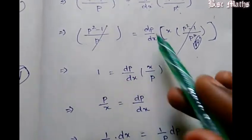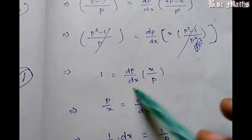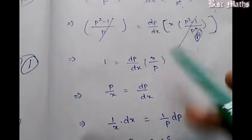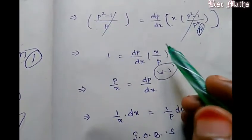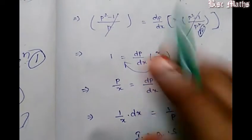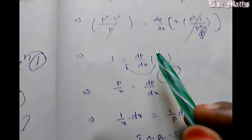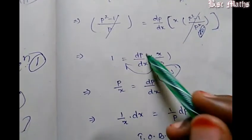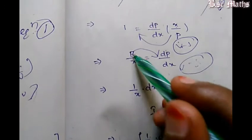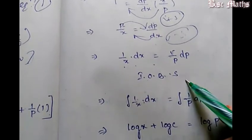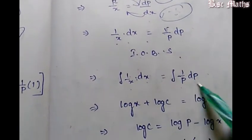So this is good: x by p equals dp by dx. Now, x by p is equal to dp by dx, so p by x equals dp by dx. Now we have the variable separable method: p terms equal dp, so 1 by p into dp equals 1 by x into dx. Taking the integral on both sides: integral 1 by x into dx equals integral 1 by p into dp.